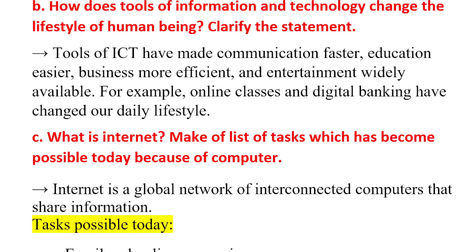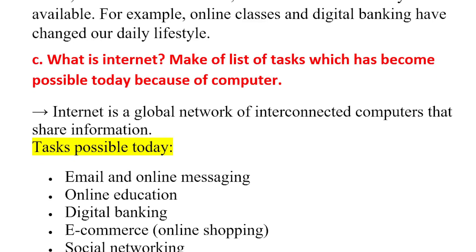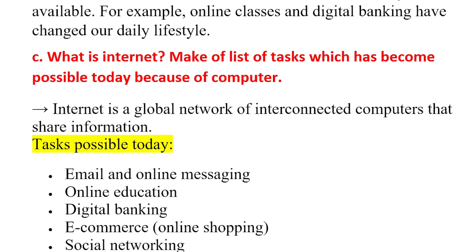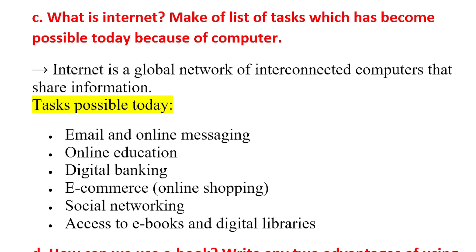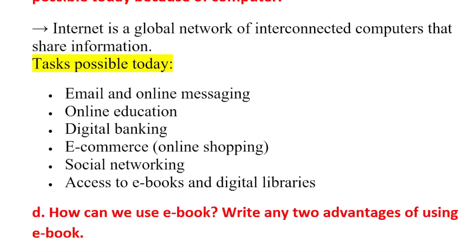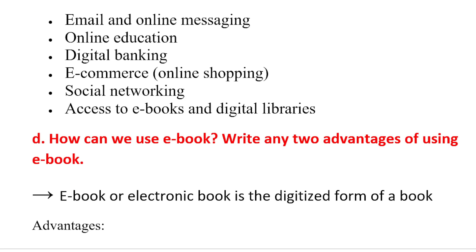Question 7: What is the Internet? Make a list of tasks which have become possible because of the computer. The Internet is a global network of interconnected computers that shares information. Tasks include: email, online messaging, online education, digital banking, online shopping, social networking, and access to e-books and digital libraries.